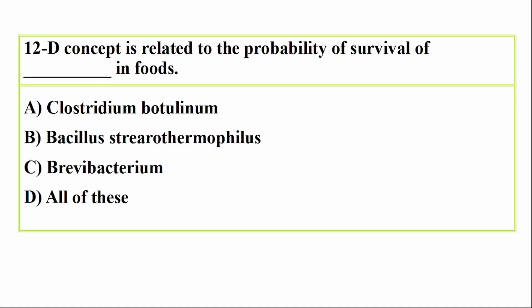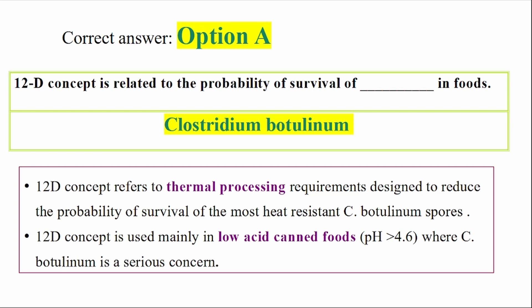The 12D concept is related to the probability of survival of which organism in foods? Options: Clostridium botulinum, Bacillus, pterothermophilus, Brevibacterium, or all of these. Correct answer: option A, Clostridium botulinum. The 12D concept refers to thermal processing requirements designed to reduce the probability of survival of the most heat-resistant Clostridium botulinum spores. It is used mainly in low-acid canned foods where Clostridium botulinum is a serious concern.